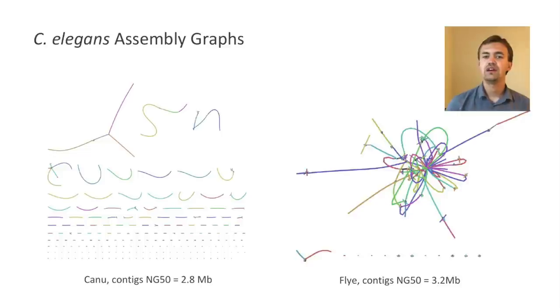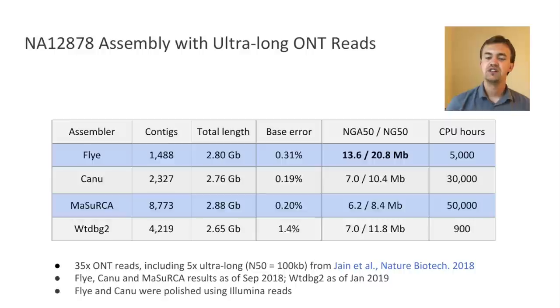And I told you that Flye and Canu produce essentially similar, very similar sets of contigs, but here's how the assembler graphs look like. In case of Canu, many contigs actually end with tips, which basically means that the information is missing. And on the other hand, Flye graph has much more connections that explain why contig termination has happened.